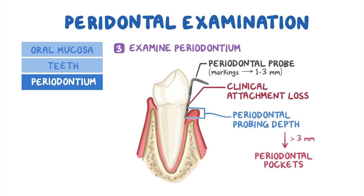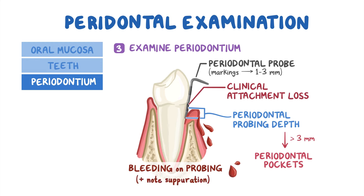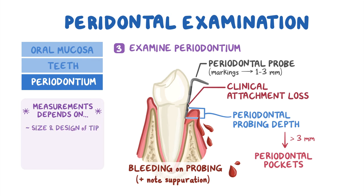Clinical attachment loss measures the distance between the cementoenamel junction and the base of the periodontal pocket. Bleeding on probing is described as a measurement of gingival inflammation. Also, don't forget to note areas of suppuration. Finally, the accuracy of these measurements depends on several factors such as the size and design of the probe tip, the amount of force used, the angulation, and the inflammation of the gingival tissue.